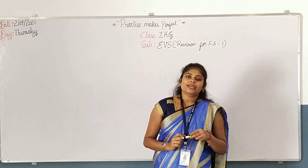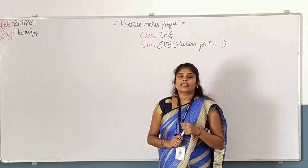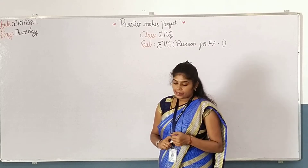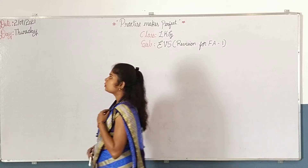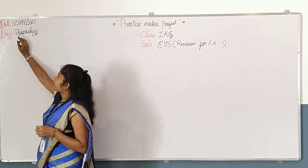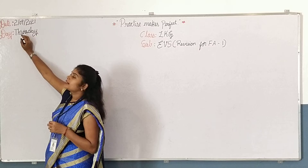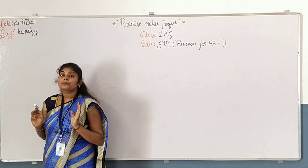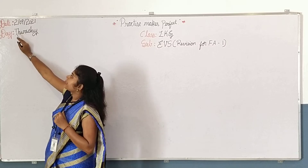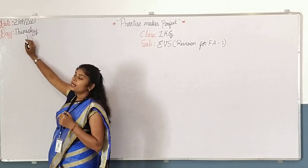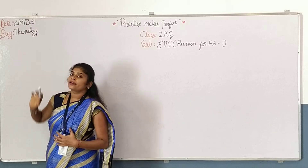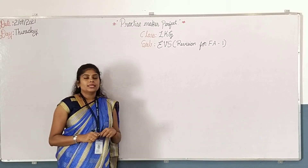We will move to the class. Before we start, we will look at today's date. What is today's date? Today is the 2nd. We are in the ninth month — September. September 2nd, 2021, Thursday.